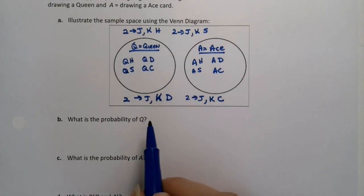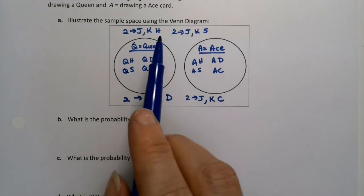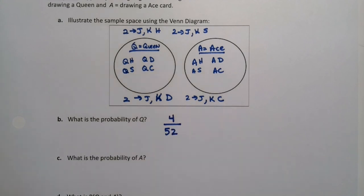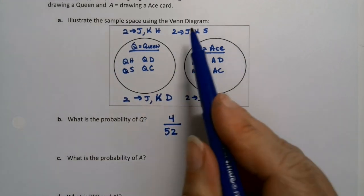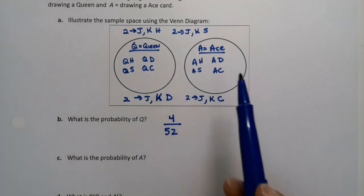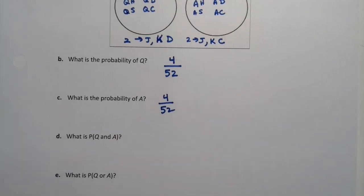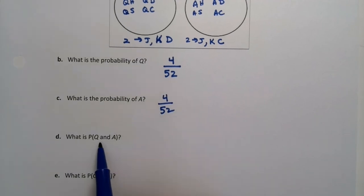All right, what is the probability of Q? So getting a queen, there's four queen cards out of 52 cards total in the sample space. Remember, the box is your sample space. And the probability of ace is also four out of 52. So what's the probability of both?